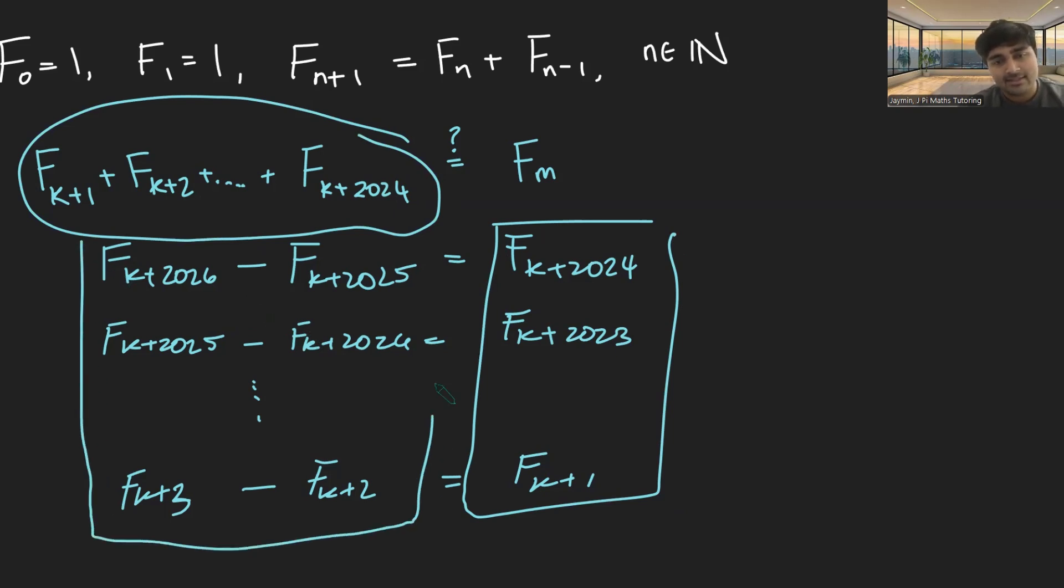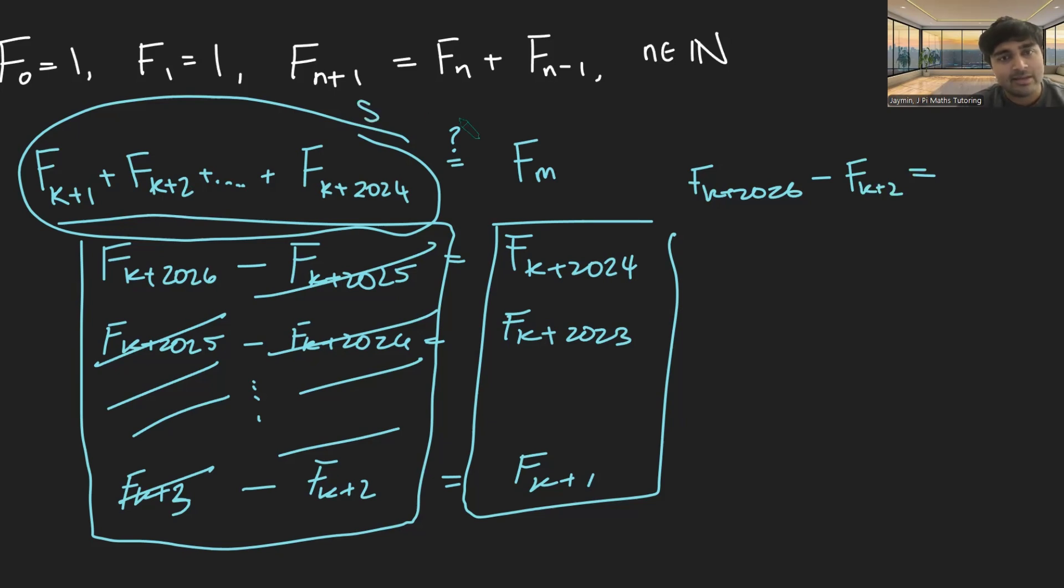And if I add up the left hand sides, you'll see something very nice happens. This F_k+2025 will cancel with that F_k+2025. This F_k+2024 will cancel with a term there. Everything is going to cancel. This is what we call a telescoping sum. And then that term there will cancel with F_k+3. So we get F_k+2026 minus F_k+2 is equal to this sum. Let me just call it S.